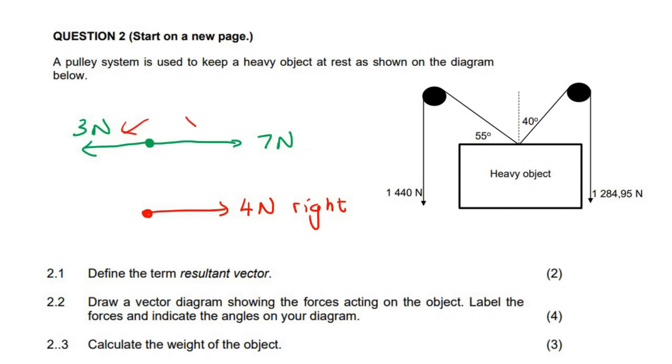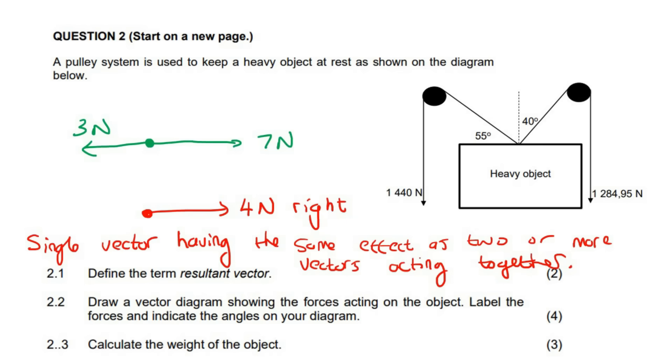So these are called vectors, and this one is the result. It's like the answer or the conclusion. So what is a resultant vector? A resultant vector is a single vector having the same effect as two or more vectors acting together. So it's a single vector which has the same effect as two or more. So this one has the same effect as that.